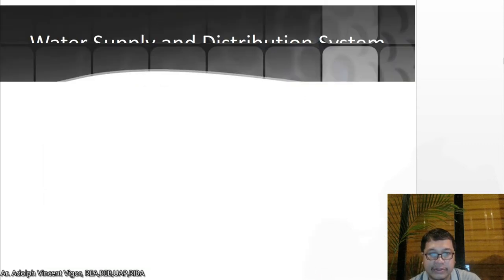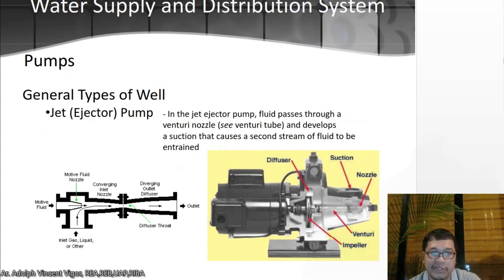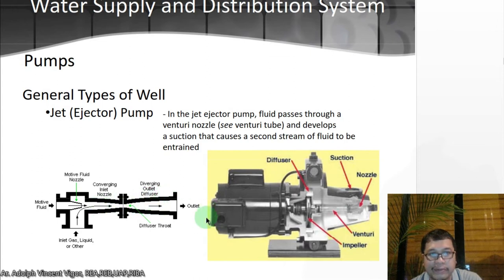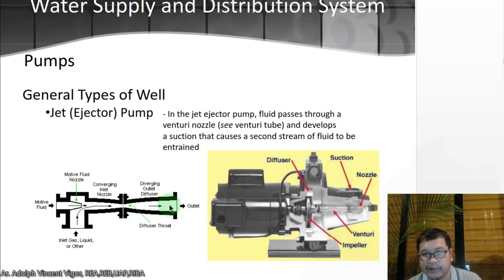Then you have the jet ejector pump. Fluid passes through a venturi nozzle and develops a suction that causes a second stream of fluid to be entrained. The motive fluid enters the nozzle — as you can see it becomes smaller, building pressure. This is called the diffuser. Analyzing the diagram: it's small here with pressure, then goes up to the outlet where the water pressure will be higher.